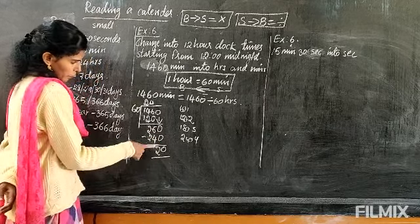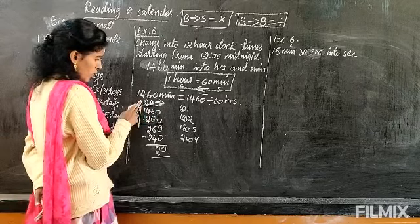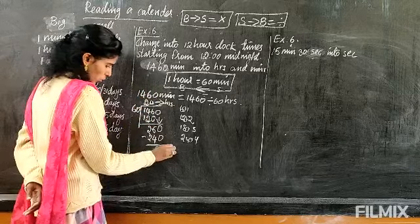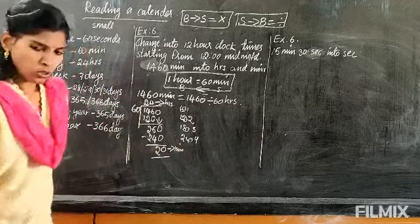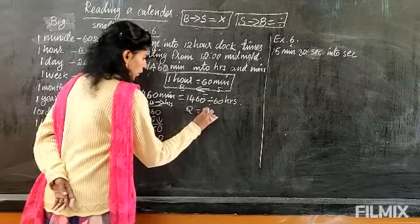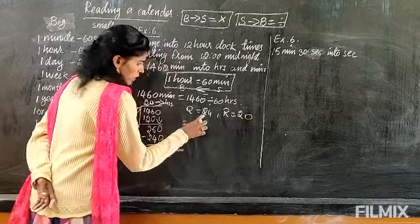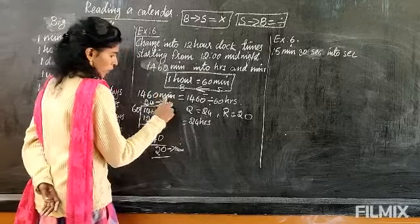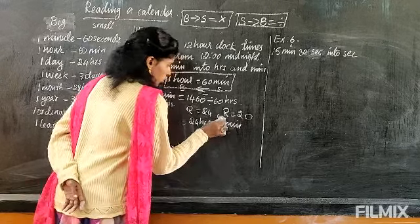So we have got the quotient and the remainder. The quotient is 24 — that means 24 hours. The remainder is 20 — those are the minutes. So after dividing, the answer is 24 hours and the remainder is 20 minutes.